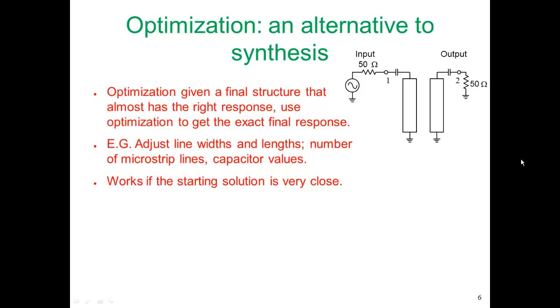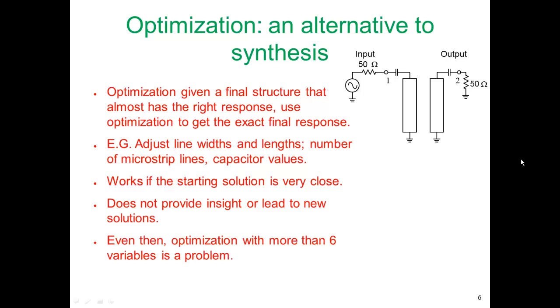Now optimization works if the starting solution is very close, but it does not provide us insight or lead to new solutions. Even then, optimization with more than six variables is quite a problem. Perhaps in ten years or twenty years there will be a breakthrough and we'll figure out how to optimize with twenty variables or thirty variables, but we're not there now.